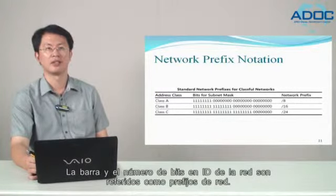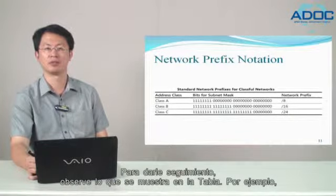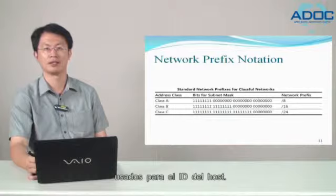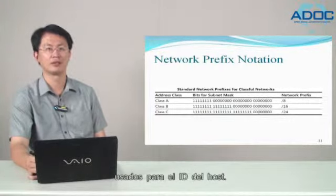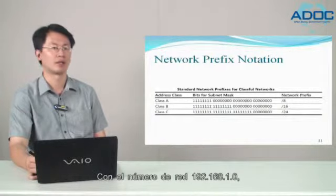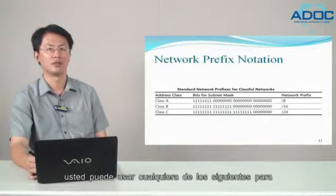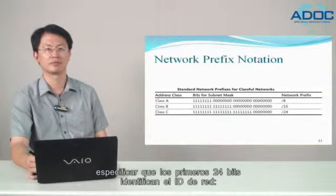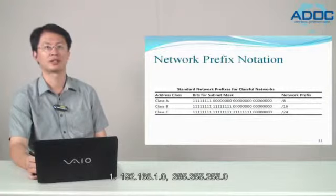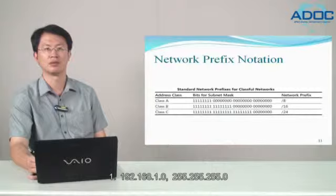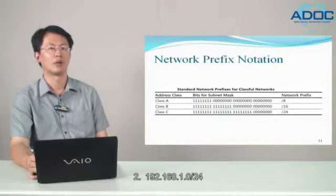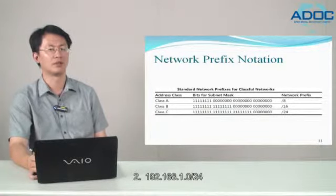The slash and the number of bits in the network ID are referred to as a network prefix. For example, with the network number 192.168.1.0, you can use either of the following to specify that the first 24 bits identify the network ID: first, 192.168.1.0 and 255.255.255.0, or second, 192.168.1.0/24.